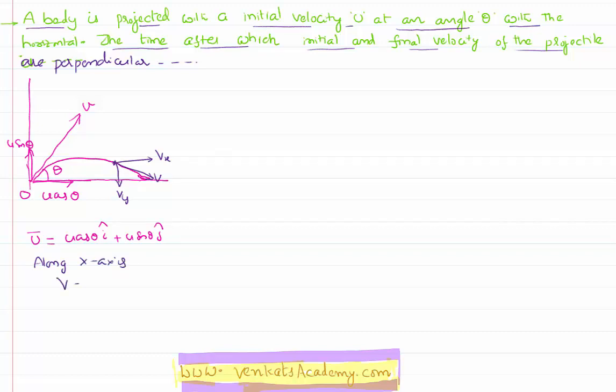I would like to use the formula v equal to u plus at. v is vx, u is ux. But you know, there is no gravity acting along x axis. Gravity always acts along only y axis. So vx is nothing but equal to ux. That is nothing but the initial velocity along the x direction. That's nothing but equal to u cos theta. Similarly,